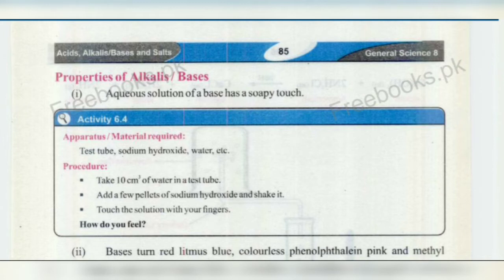In Charles' law we are going to study two variables: temperature and volume. The two constants will be the mass of the gas and pressure of the gas. This law says that the volume of a given mass of a gas is directly proportional to the temperature when the pressure is kept constant. So the pressure is constant and the mass of gas is constant, but the volume is directly proportional to temperature.